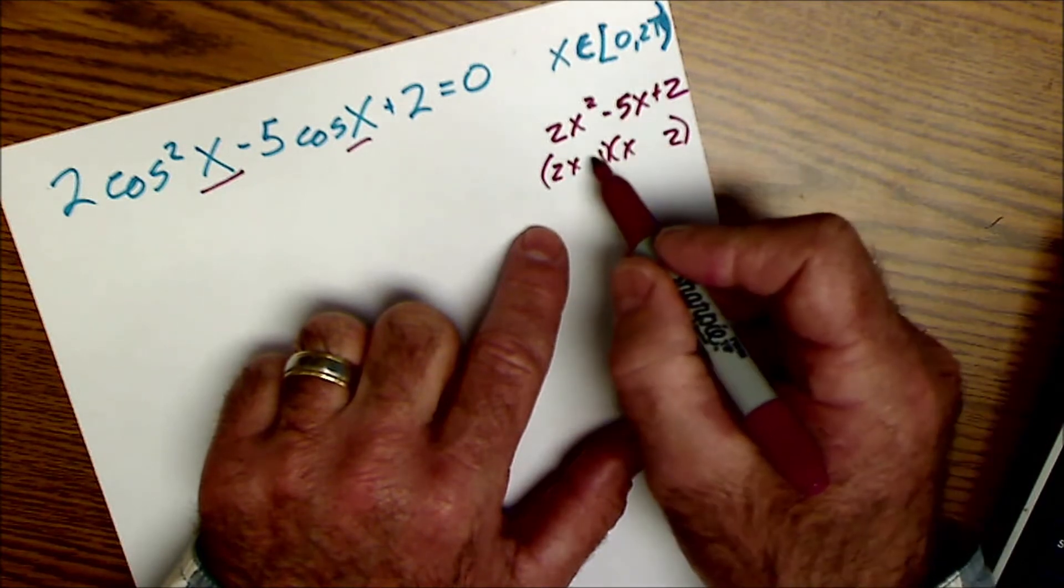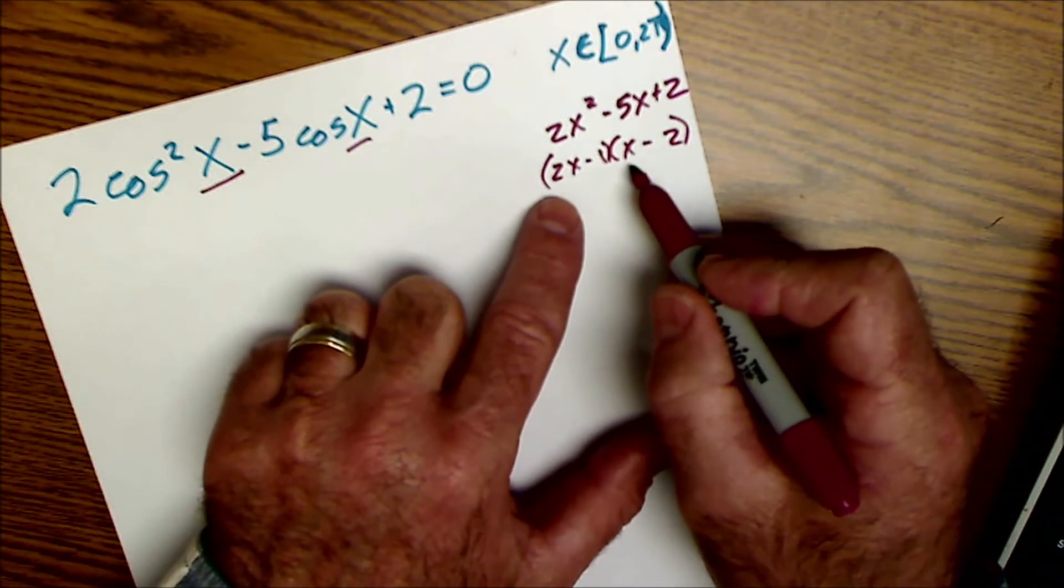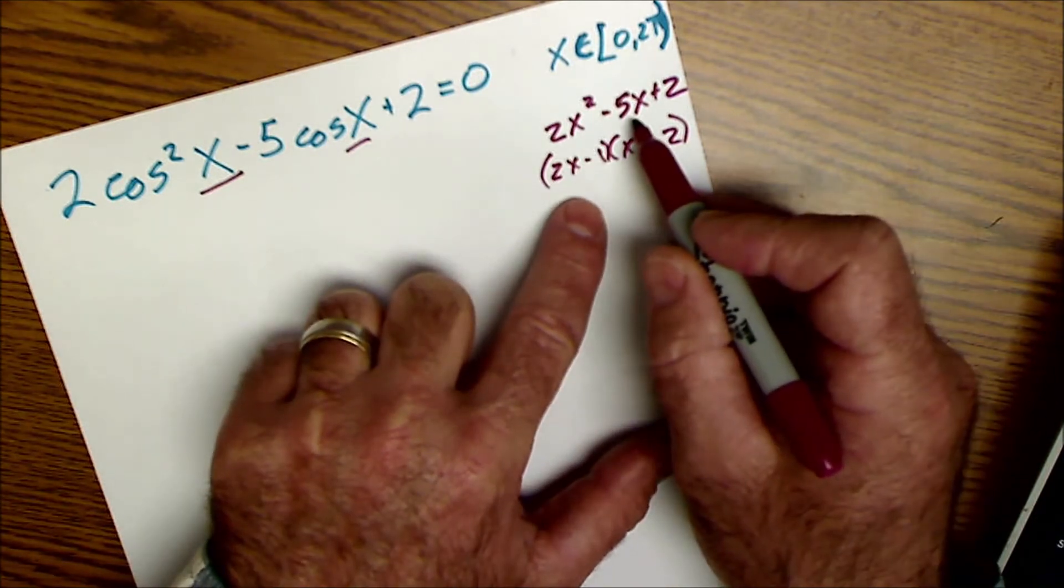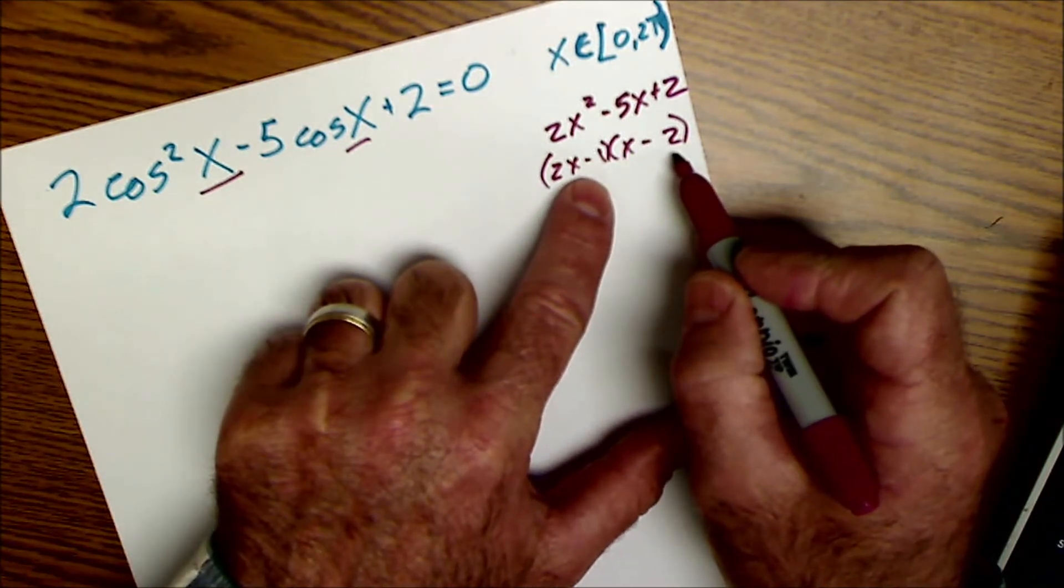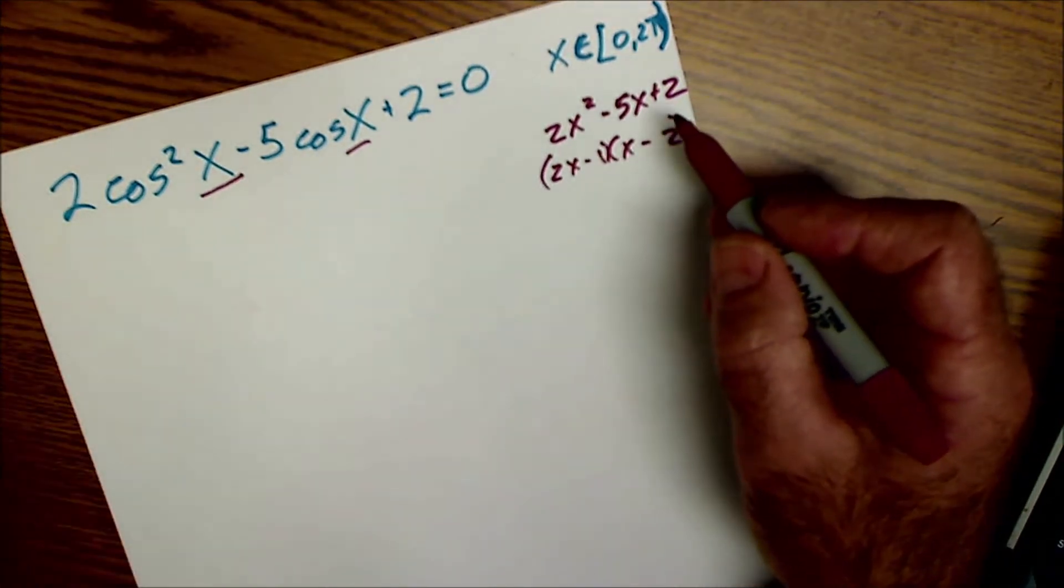And then either they're both negative or both positive to give me a 2. The middle term is a negative 5. So it would be a negative and a negative. The check is 2x squared, first terms, outer terms, minus 4x, inner terms, minus 1x, minus 5x, last terms, negative 1 times negative 2 is 2.